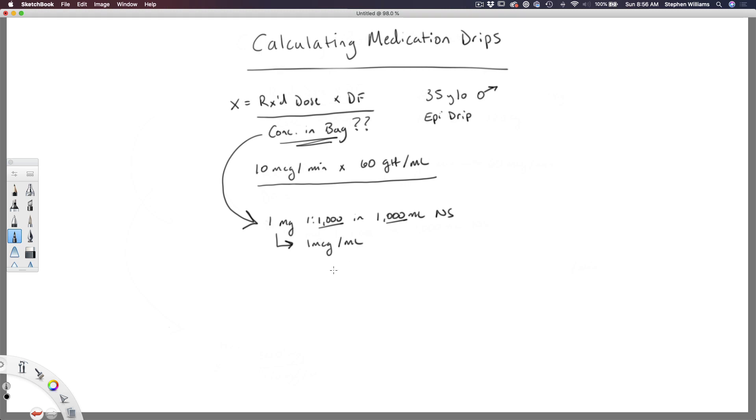So now we can take that and we can punch it into our formula. When we calculate up top, we see that we get 600 over 1. Cancel out our units, and we see that we're left with the units of drops per minute, and 600 over 1 is just 600.